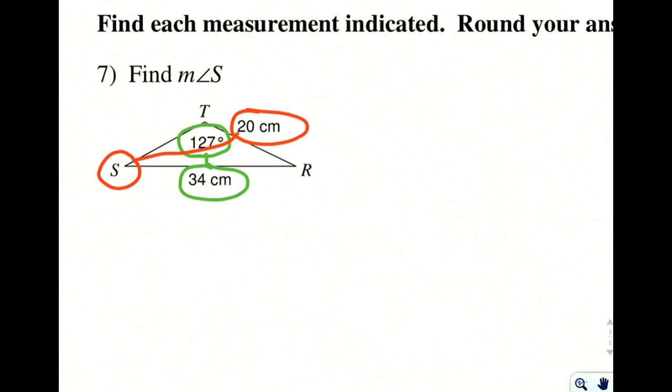We also have a side 20 that matches up with angle S. Now we don't know what S is, but we know that they're paired. We're supposed to figure out what S is, so we're supposed to find S.